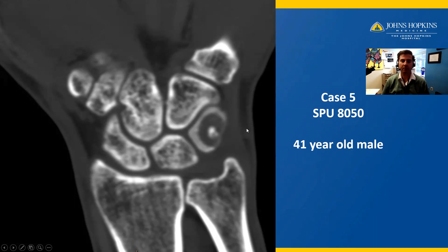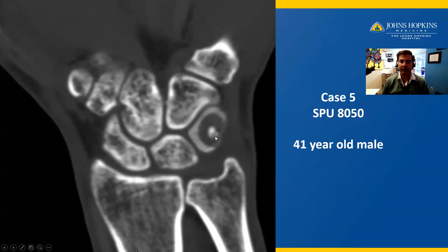Case number five is from a 41-year-old male. Here we have a CT scan in a coronal view in a bone window showing an interesting mass in the triquetrum carpal bone. The black corresponds to a lytic process, and centrally there is this white nidus, a central nidus corresponding to sclerotic bone in the background of a predominantly lytic process with circumscribed edges.